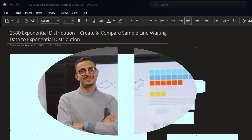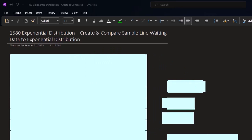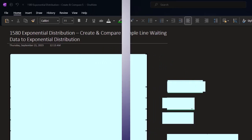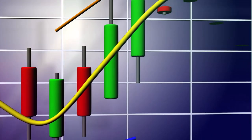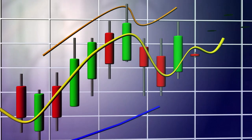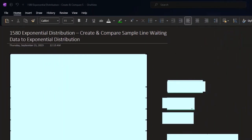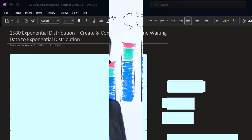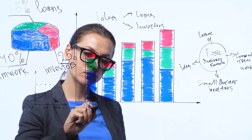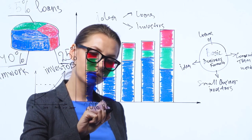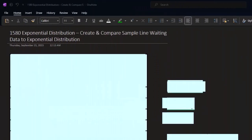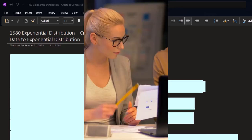We're now looking at families of curves that have functions related to them, which often approximate real-world data sets. If we can approximate a data set with a curve, that gives us more predictive power using the actual formula. We've been looking at different curve types such as the uniform distribution, Poisson distribution, and binomial distribution.